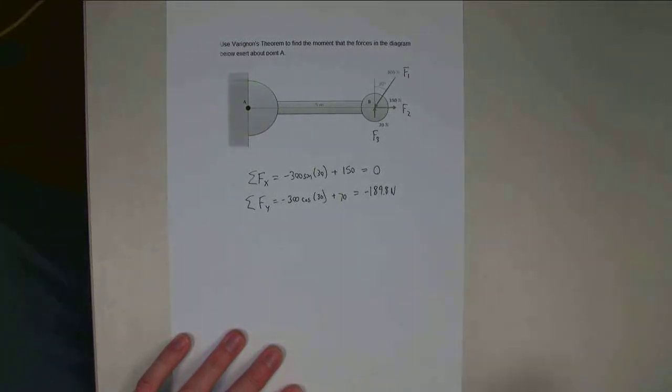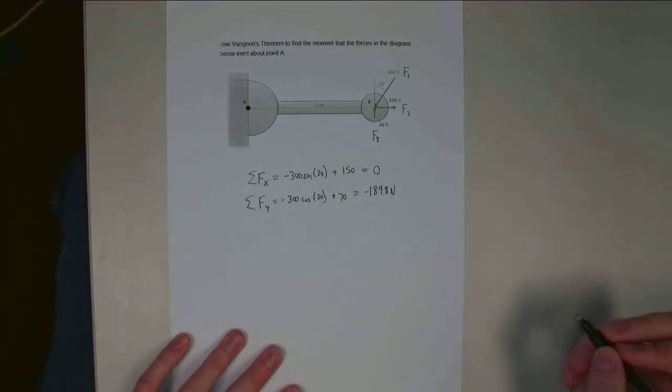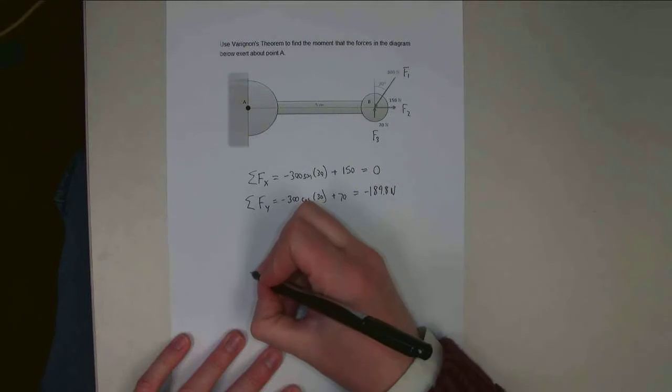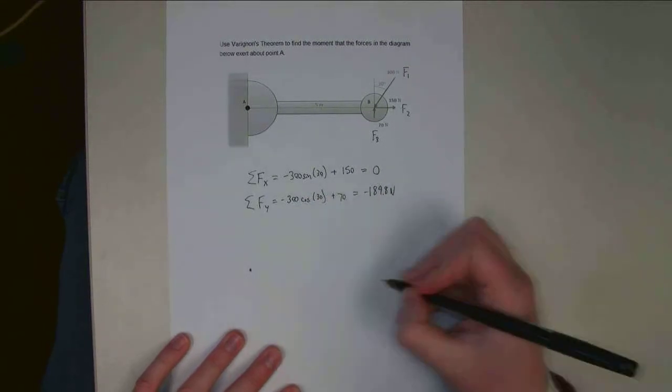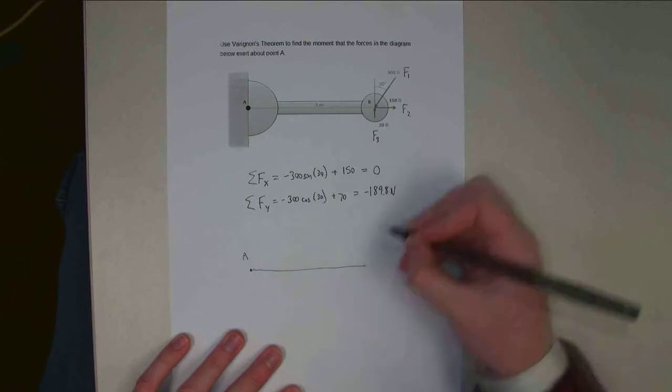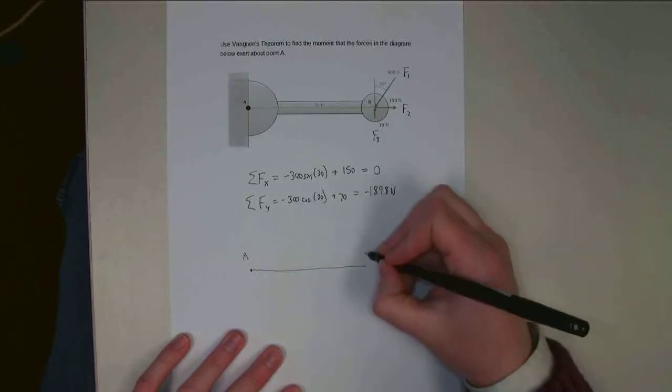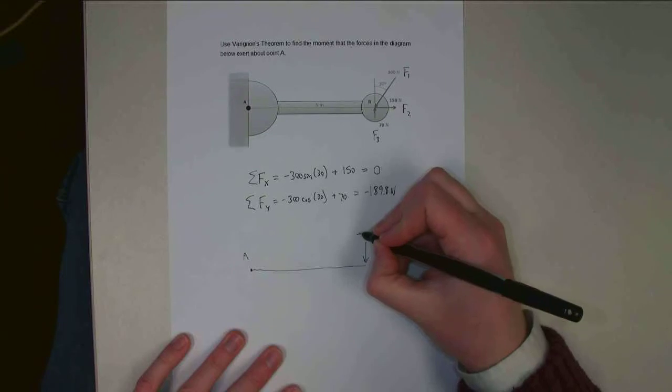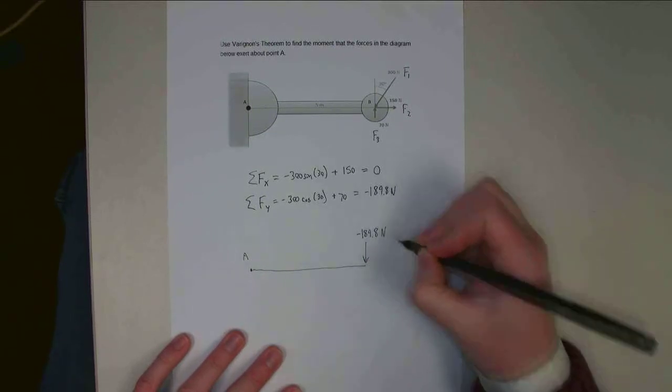So now I can redraw this as a single resultant force. So I've got point A over here, I've got my moment arm, and out here at the end I've got a single force of negative 189.8 newtons.